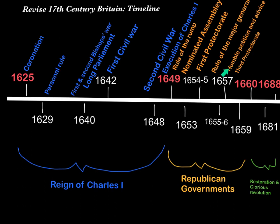So by 1657 there was a new constitution. The Second Protectorate Parliament suggested the Humble Petition and Advice in 1657, which firstly suggested government by a king to ensure stability with hereditary succession. Oliver Cromwell refused this part, so they changed the idea to a Lord Protector being in charge with hereditary succession instead, Parliament being able to control the army, regular elections, and some religious toleration as well.